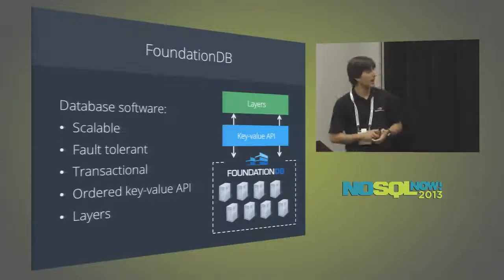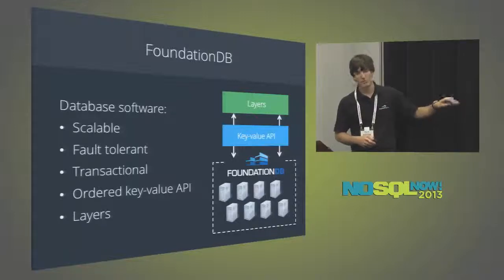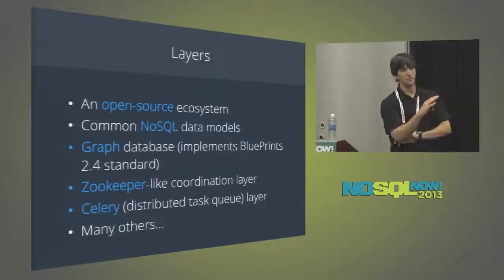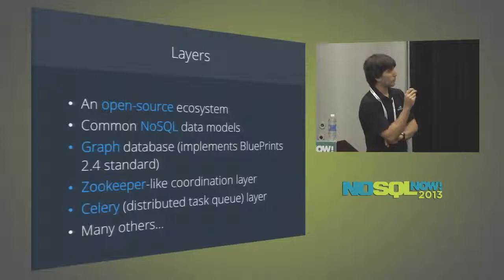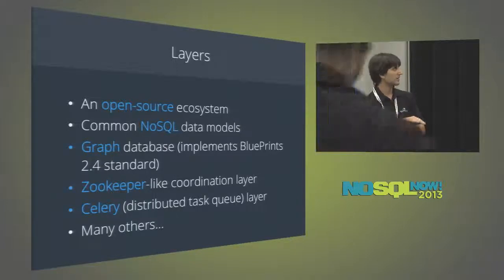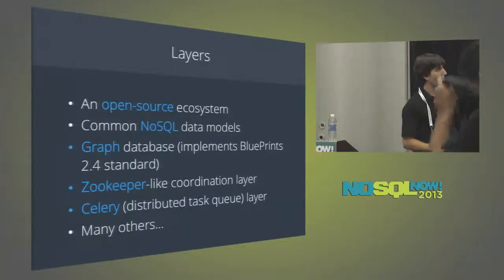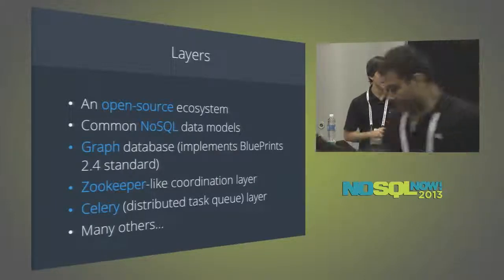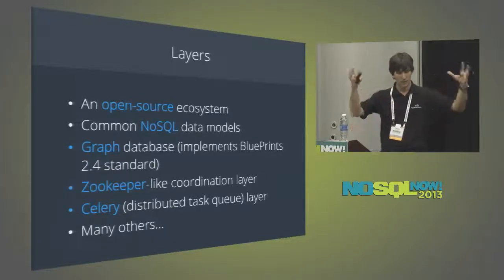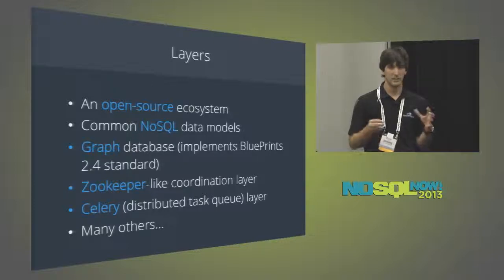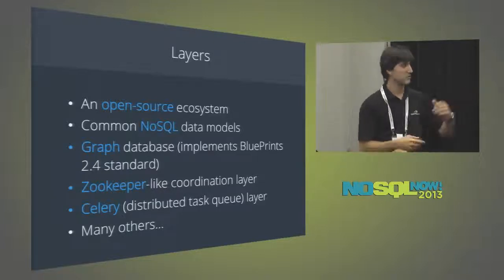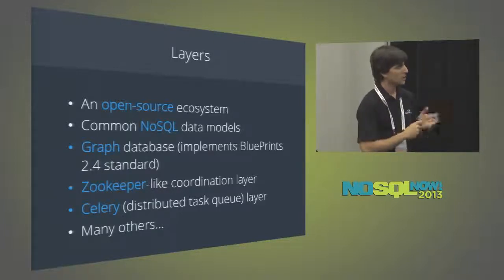We have an ordered key-value API, and on top of it things we call layers. We're building an open-source ecosystem of these abstractions — all the common NoSQL data models that encode and pack their data into keys and values. For example, we have a graph database implementing the Blueprints graph database spec. To the outside world it looks like a graph database — nodes, edges, indexes, queries — but inside the FoundationDB world it's keys and values. We also have a ZooKeeper-like coordination layer, a distributed task layer that one of our interns built.